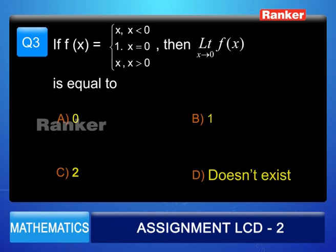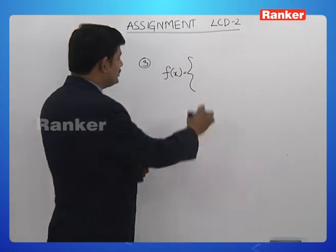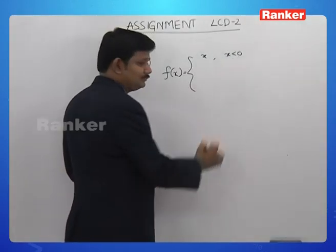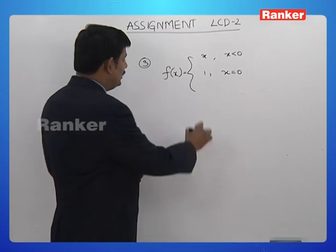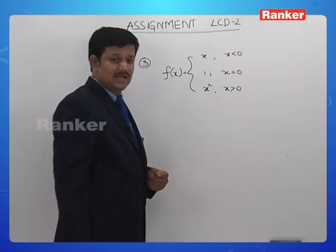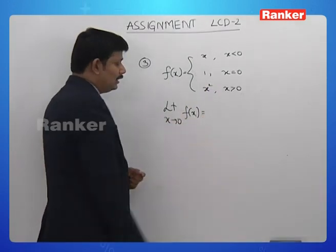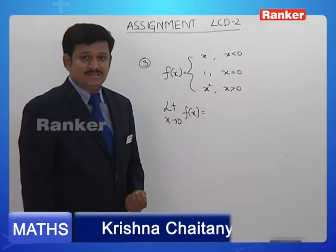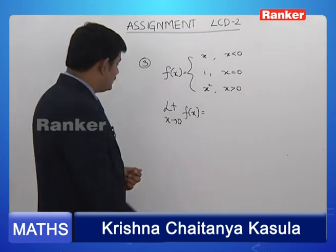Next question: let f(x) equal x if x is less than 0, equal to 1 if x equals 0, and equal to x² if x is greater than 0. We have to find the limit extending to 0 of f(x). We know this limit exists only when the left-hand limit and right-hand limit both exist and are equal. So let us evaluate them separately.